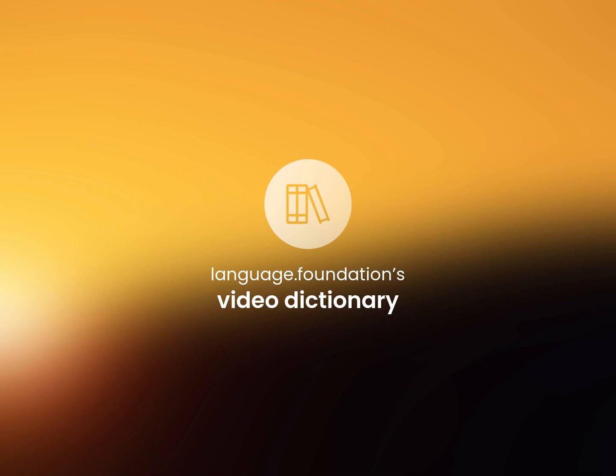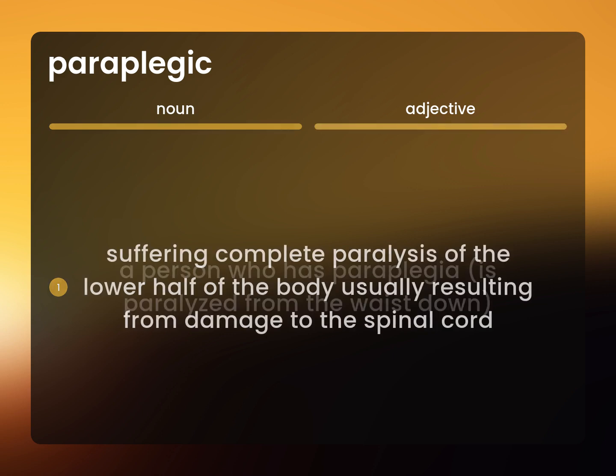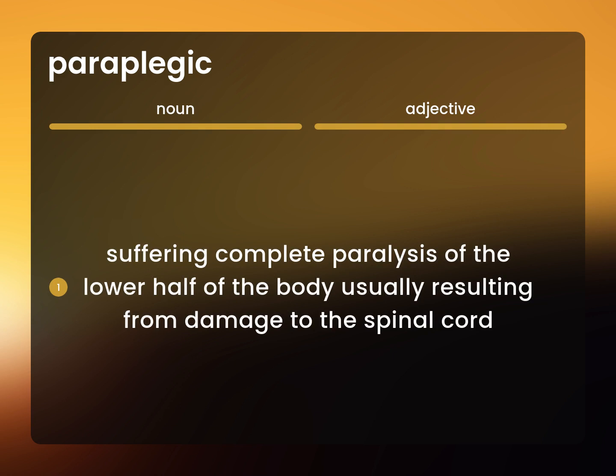Language.Foundation's Video Dictionary, helping you achieve understanding. A person who has paraplegia is paralyzed from the waist down, suffering complete paralysis of the lower half of the body, usually resulting from damage to the spinal cord.